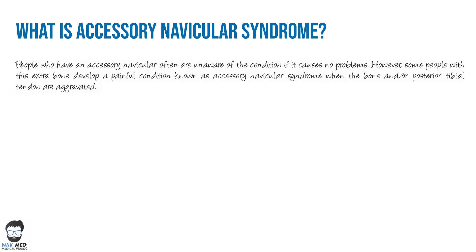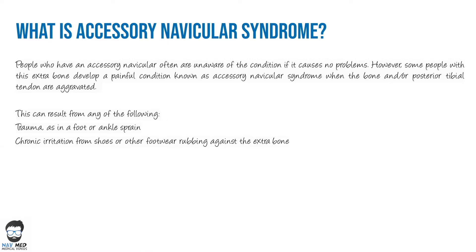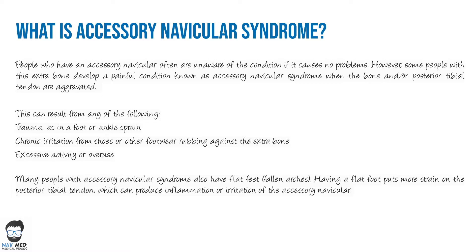People who have an accessory navicular are often unaware of the condition because it doesn't cause any problems. However, some people with this bone develop a painful condition known as accessory navicular syndrome, when the bone and the posterior tibial tendon rub against each other causing inflammation or pressure on the tendon. This can result from trauma such as a foot or ankle sprain, chronic irritation from shoes, excessive activity or overuse. Many people with accessory navicular syndrome also have flat feet, which puts more strain on the posterior tibial tendon and can produce inflammation or irritation of the accessory navicular.